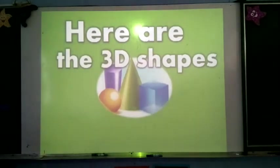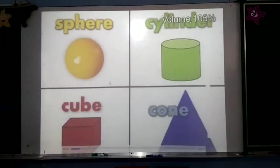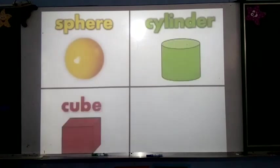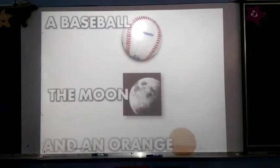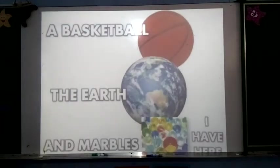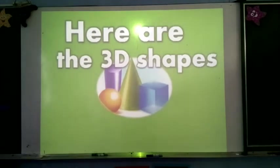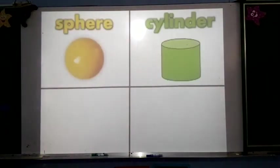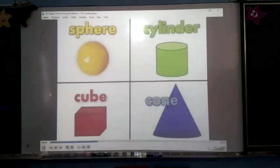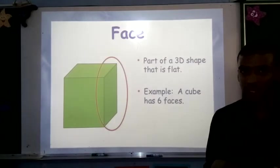Here are the 3D shapes that I know. A sphere, a superdome, a cube, and a cone. A baseball, a moon, and an orange are all examples of a 3D shape that people call a sphere. Here are the 3D shapes that I know. A sphere, a superdome, a cube, and a cone.